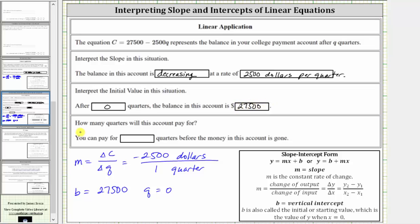And for the third question, how many quarters will this account pay for? Remember the account balance is equal to C. To answer this question, we set C equal to zero and solve for Q. Setting C equal to zero gives us the equation zero equals 27,500 minus 2,500 Q. Graphically, this would give us the horizontal intercept.